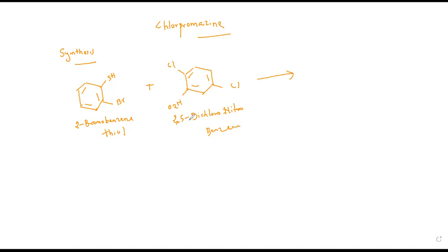When you react 2-bromobenzene thiol with 2,5-dichloronitrobenzene, halogens are very good leaving groups. They can leave the reaction with a negative charge due to the electronegativity difference between the carbon atom and chlorine. The carbon atom will get electron deficiency as soon as the chlorine leaves. Hydrogen, being the least electronegative atom, gets a positive charge, and the positively charged hydrogen and negatively charged chlorine combine to remove HCl as a byproduct.